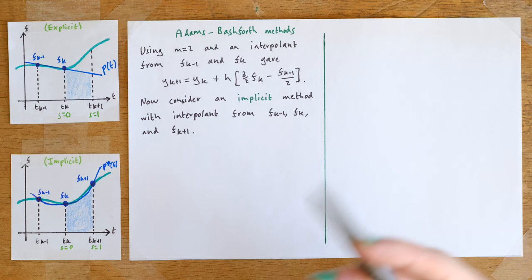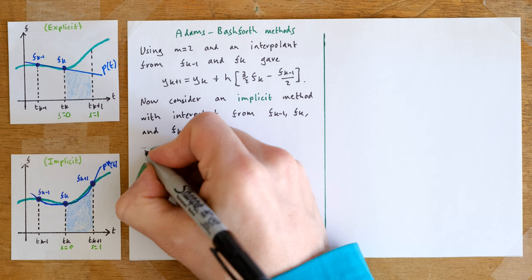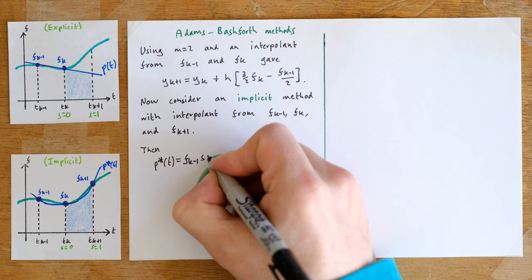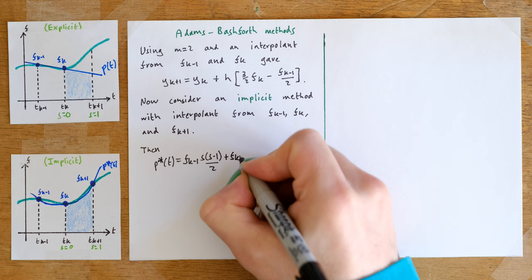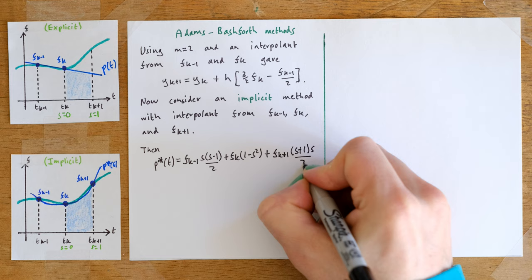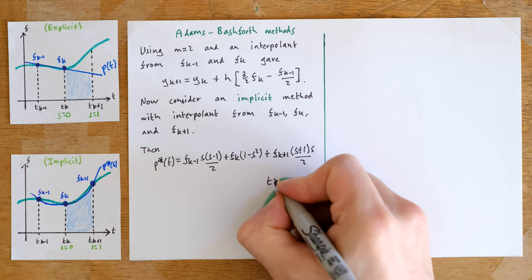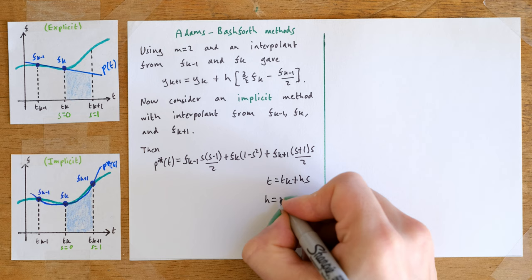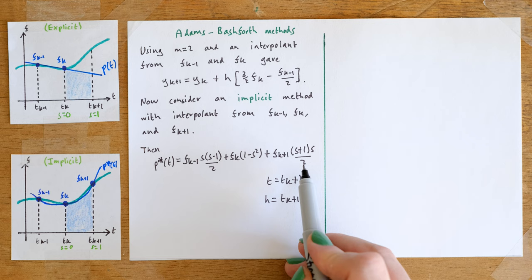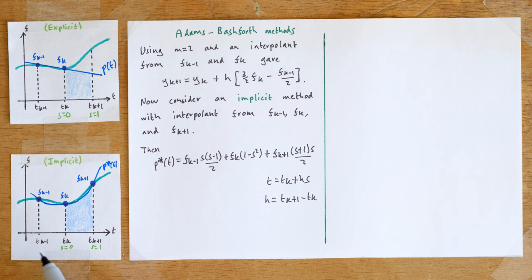The quadratic p*(t) is given using Lagrange basis polynomials: p*(t) = f_{k-1} · s(s−1)/2 + f_k · (1−s²) + f_{k+1} · s(s+1)/2, where s is defined as before so that t = t_k + hs. The three terms s(s−1)/2, (1−s²), and s(s+1)/2 are the Lagrange polynomials associated with s = −1, s = 0, and s = 1 respectively.